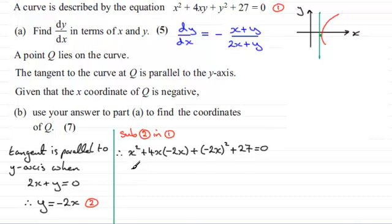So cleaning this up we've got x squared minus 8x squared and then plus 4x squared plus the 27 equals zero. So we end up with a total of minus 3x squared equals, and I'm going to take the 27 from both sides, so it's going to be minus 27. And if I divide both sides by minus 3 we've got x squared equals 9.